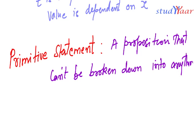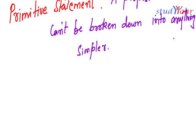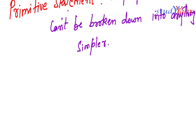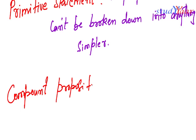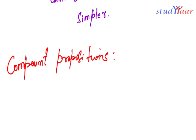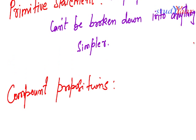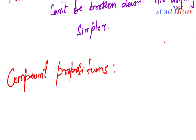Using primitive statements we can form complex statements, also known as compound propositions. Compound propositions are primitive propositions connected together with connectives.